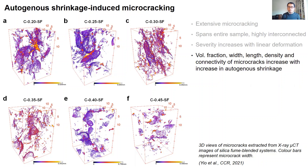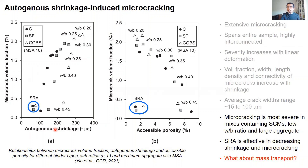The microcrack volume fraction plotted against autogenous shrinkage and total accessible porosity shows that the degree of microcracking increases with shrinkage, and that the denser systems at low water-binder ratios containing SCMs showed the most severe microcracking — which is a potential problem. However, the use of shrinkage-reducing admixtures is highly effective in mitigating shrinkage and therefore decreasing the amount of microcracking.